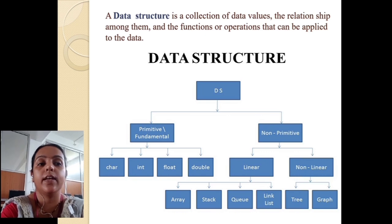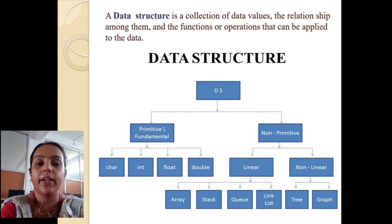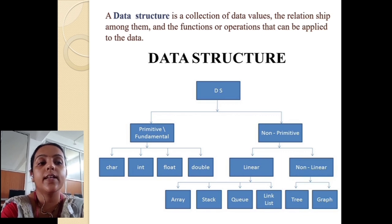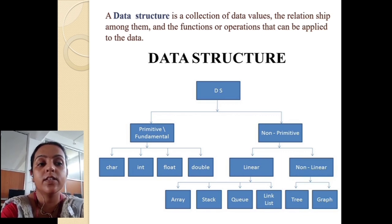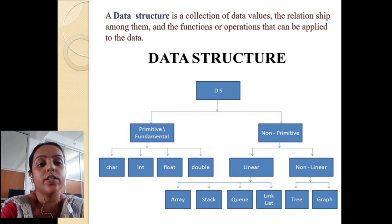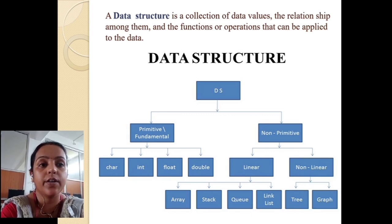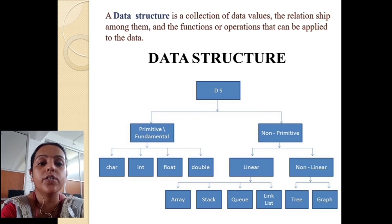Second, you can see that non-primitive data structure has two types: first is linear data structure and second is non-linear data structure. In linear data structure there are array, stack, queue, and linked list. In non-linear there are tree and graph. In our data structure subject we will learn all of these. Today we start with array.